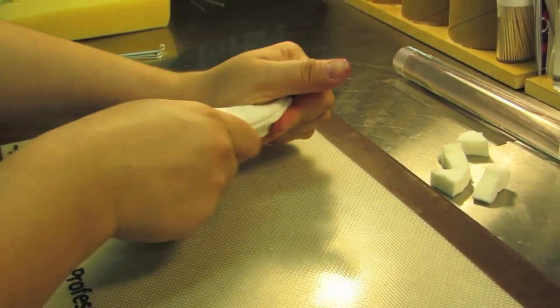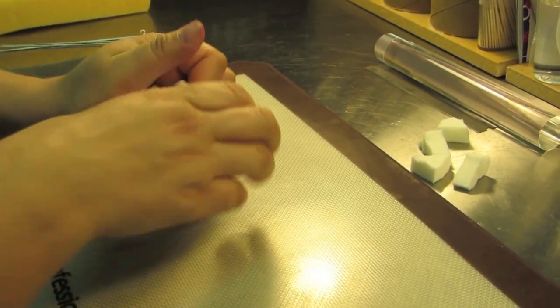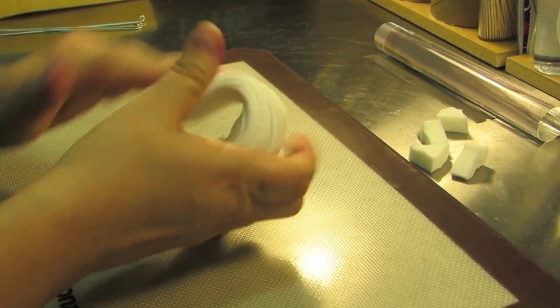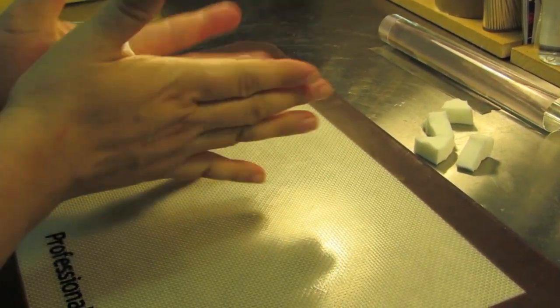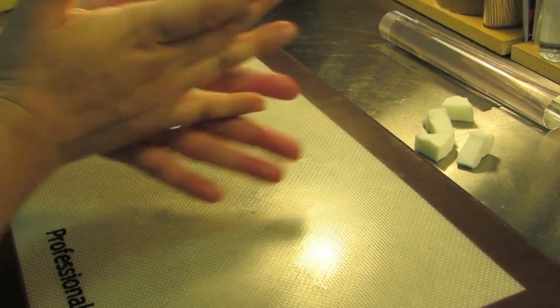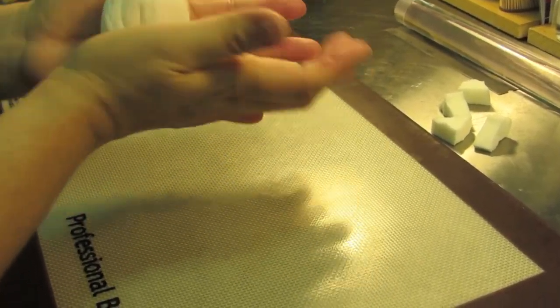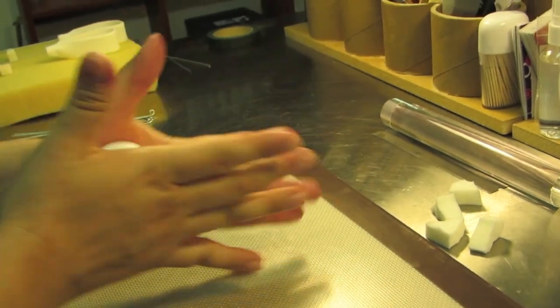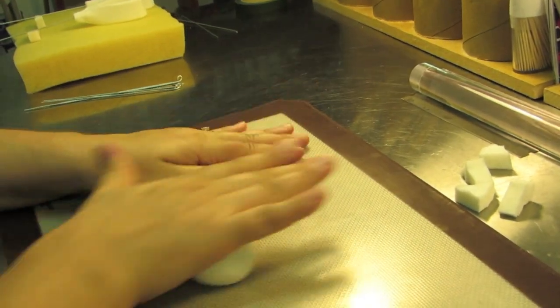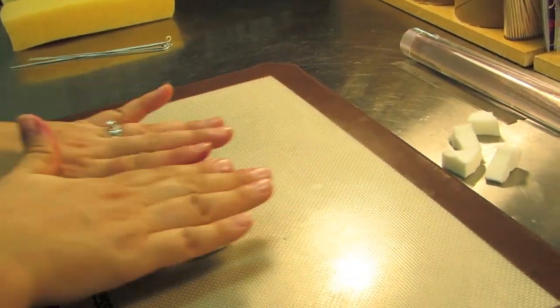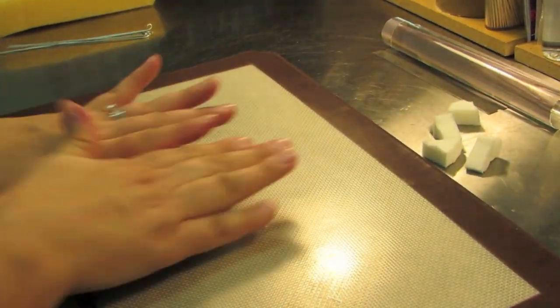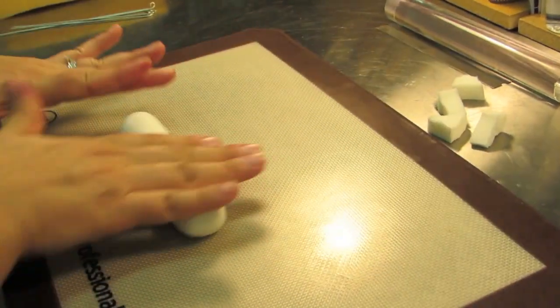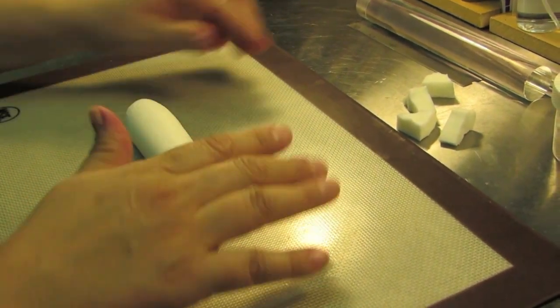When we roll it out, it should take out the majority of the wrinkles. So just try to work it a little bit in your hands so that there's not a lot of cracks and wrinkles on your gum paste.